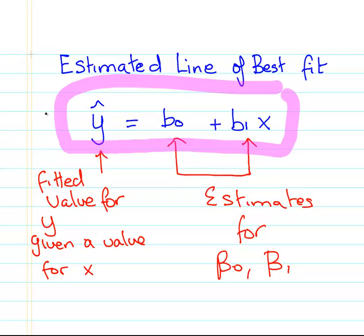There is no error term in this part here. We verbalize this as Y hat. It's essentially a fitted value for Y given a value for X. We'll come back to that later on. It's not exactly the Y, not what we observe. It's actually for some given value of X, what will we predict the value of Y to be.